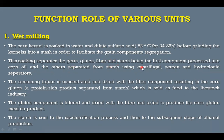This soaking separates the germ, gluten, fiber and starch from the corn oil. The starch is separated with the help of centrifugation, screening, or a hydrocyclone separator. Other than starch, some liquor is also present and that liquor is dried and filtered out, from which corn gluten is formed. Corn gluten is the protein separated from the starch and it is sold to the livestock industry as a by-product. The main focus is on starch, which is then sent to the saccharification process and subsequent steps of ethanol production.